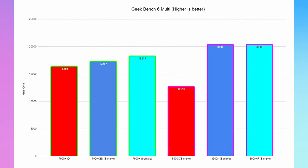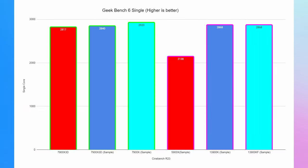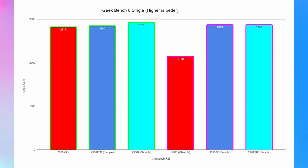Geekbench results largely mirror Cinebench. The 7900X 3D scored 16,385 multi-core on my tests versus a sample of 17,257. The 7900X itself scores 18,219, and Team Blue (13900K) leads at 20,305. In Geekbench 6 single-core, the 7900X 3D scored 2,817 versus a sample of 2,840. Interestingly, the 7900X leads single-core over all competitors including Intel at this metric — a win for Team Red — but the 7900X 3D still underperforms the 7900X, as expected given V-cache is the focus here.